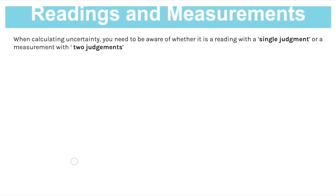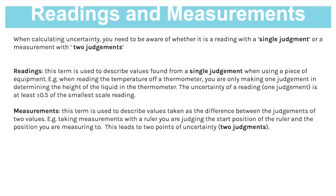Here's something I don't think many students are aware of: the difference between taking a reading and taking a measurement. This is what I meant by single judgment and two judgments. When you calculate uncertainty, you need to be aware of whether you have just recorded a reading, which has a single judgment, or a measurement, which has two judgments. A reading is the term used to describe values found from a single judgment - for example, a thermometer where you're just reading the point that the liquid goes up to.